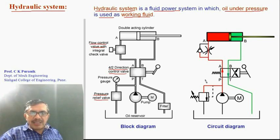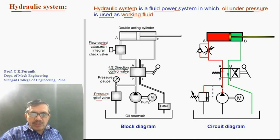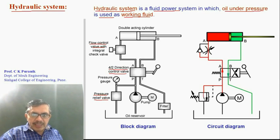The symbolic representation of each component is drawn in the circuit. The oil reservoir is shown with its symbol, and the pump is shown by a circle with a triangle pointing outwards. The pressure relief valve symbol has a spring and an arrow showing the direction of oil flow. In the normal position there is no connection from inlet to outlet. When pressure exceeds the preset value, the arrow moves to make the connection, allowing oil to flow from inlet to outlet.